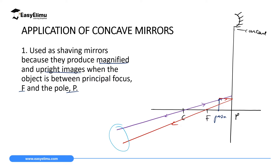These rays can never meet on the left-hand side, but if we extend these rays they are going to meet somewhere behind the mirror. When they meet they form an image. This image is formed behind the mirror, therefore it is virtual. The image is virtual but it is taller or larger than the object. This property — an upright and larger image when the object is between F and P — makes shaving very easy.